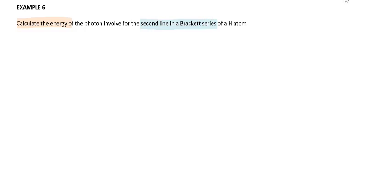If you still remember in the lecture video — the part two video — the formation of the emission line spectrum is due to the transition of the electron from higher energy levels to lower energy levels.